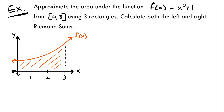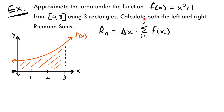We're going to start with the right Riemann sum, or using right endpoints. The formula is R sub n equals delta x times the sum from i equals 1 to n of f of x sub i. This says that to find the area using right endpoints for n rectangles, that equals delta x — the width of our rectangles — times the sum of the different heights. We're summing from 1 to n because that's how many heights we need to add before multiplying by the width.